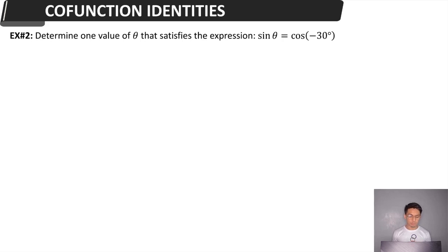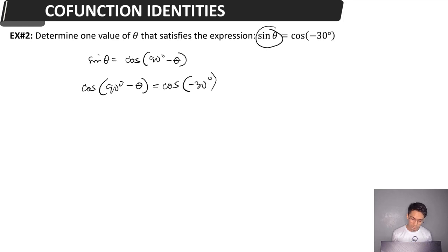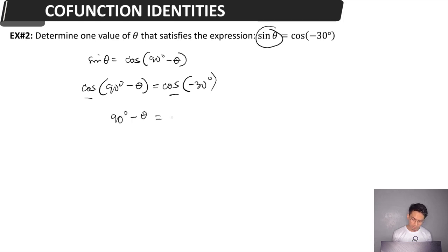Example 2: Determine one value of theta that satisfies the expression sine θ = cosine(−30°). We apply the co-function identity again, since sine and cosine are co-functions. By co-function identities, sine θ = cosine(90° − θ). Substituting, we get cosine(90° − θ) = cosine(−30°). Setting the angle measures equal: 90° − θ = −30°.